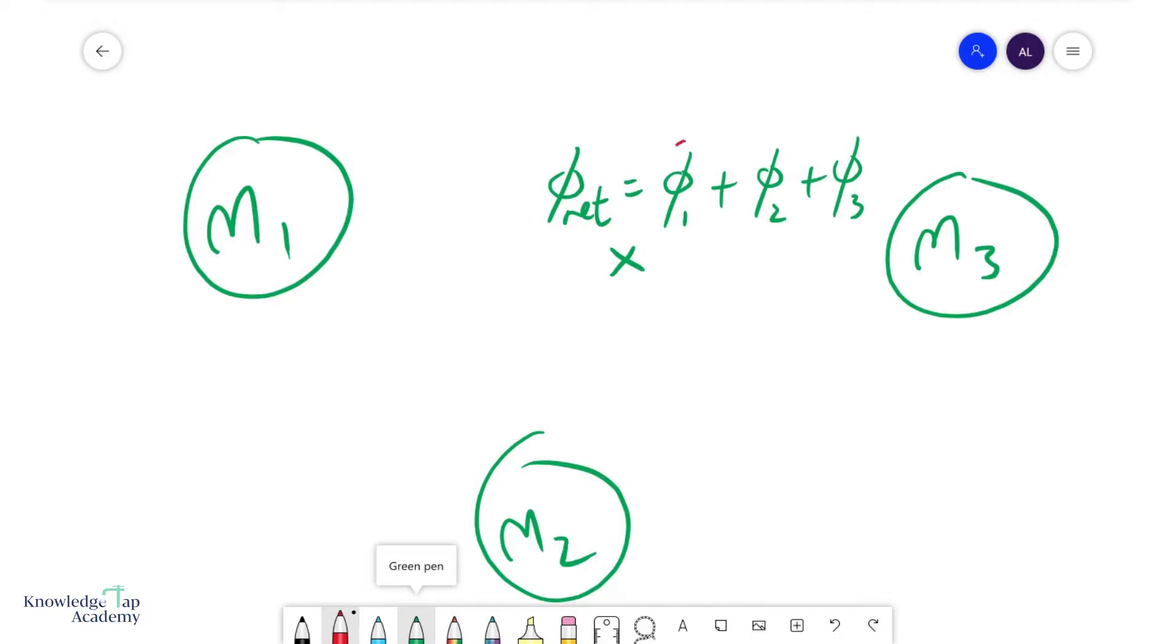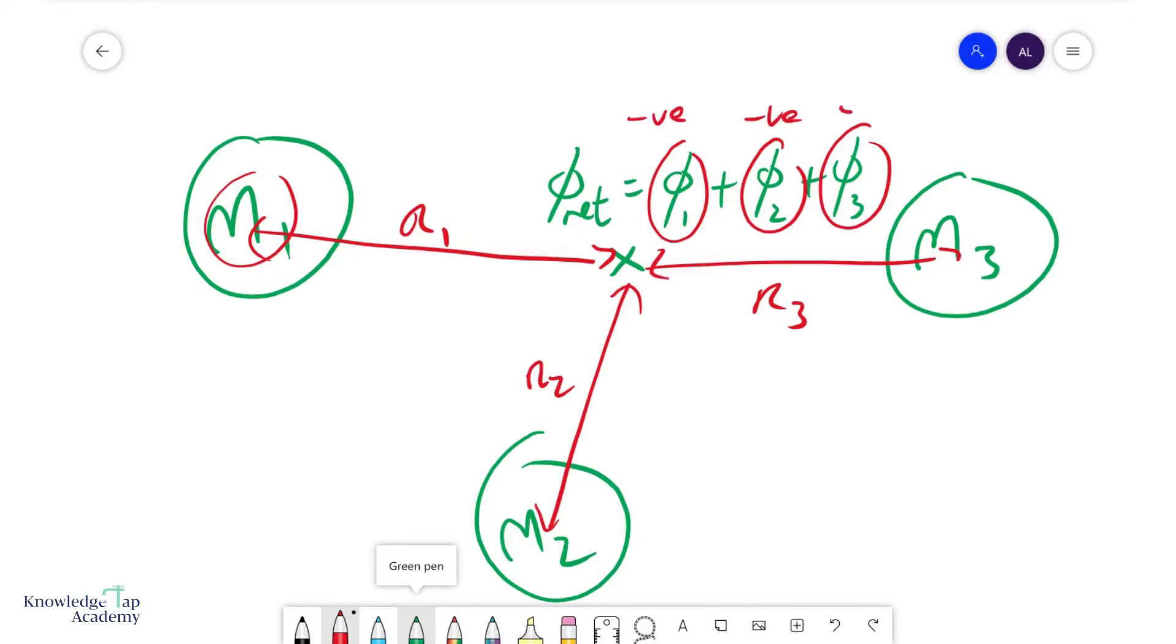And so we can calculate phi 1 due to him, so that would be GM1 over R1, phi 2 due to him, GM2 over R2, and phi 3, GM3 over R3. Bear in mind that these are all negative values. And so your potential can only get more negative. It cannot get more positive.